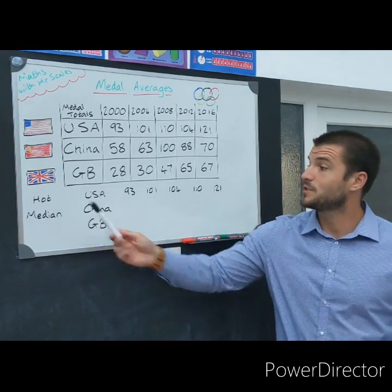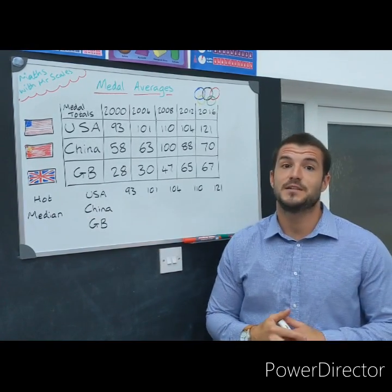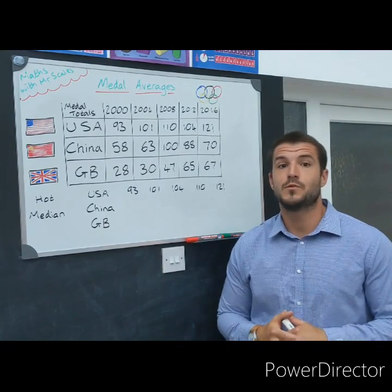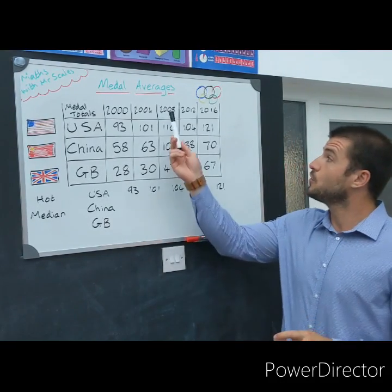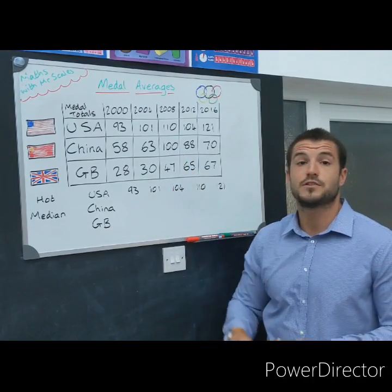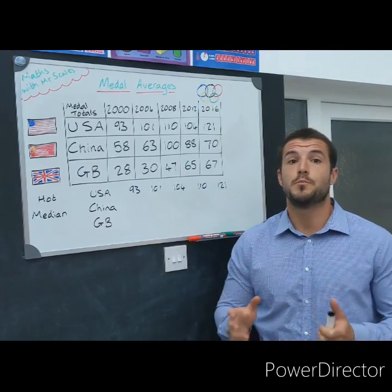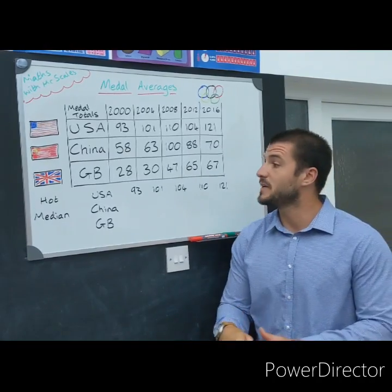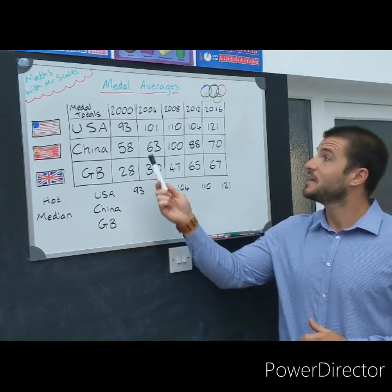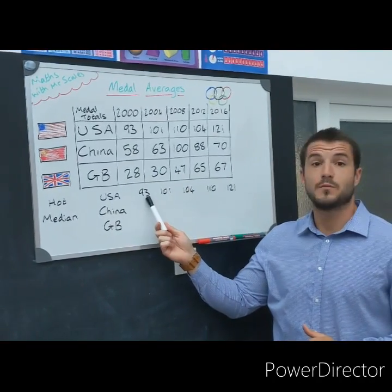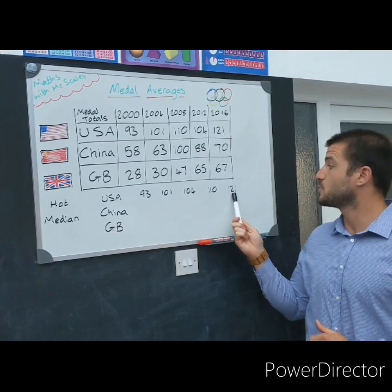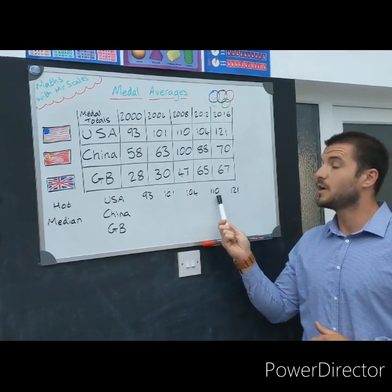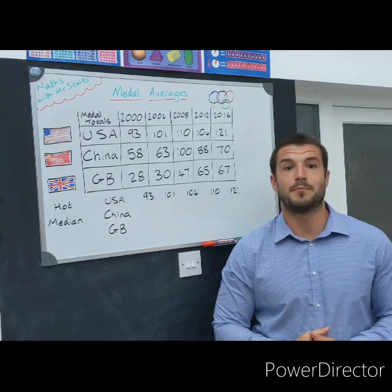Okay, for those of you on the hot challenge, you're looking to find the median for each of these countries. Remember, the median is the middle number. However, it's not just about looking at all of the numbers in the 2008 column — you must put them in ascending order first, that's smallest to biggest. So for example, with the USA, the least amount of medals they had was 93, the most was 121. We put the numbers in order, and our median is that middle number. Good luck.